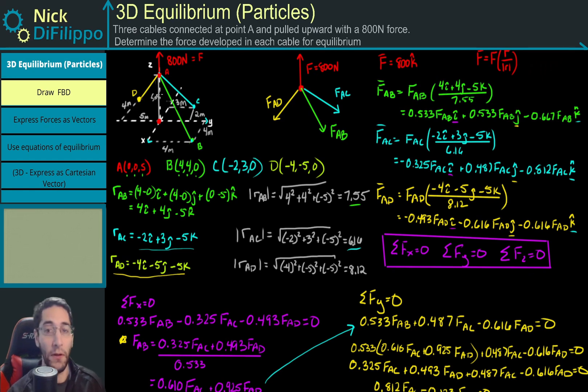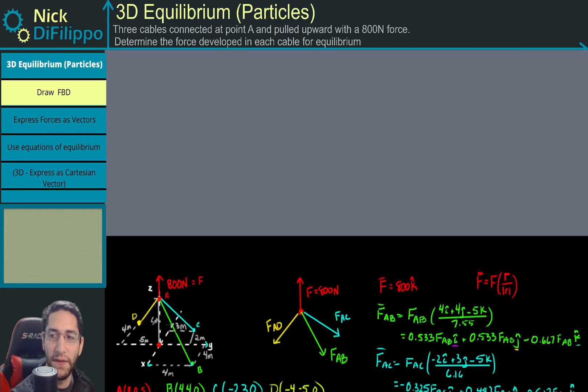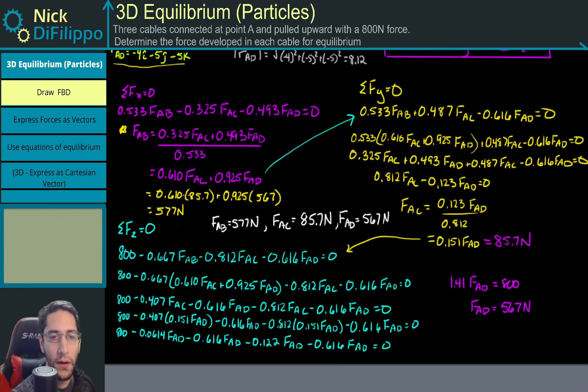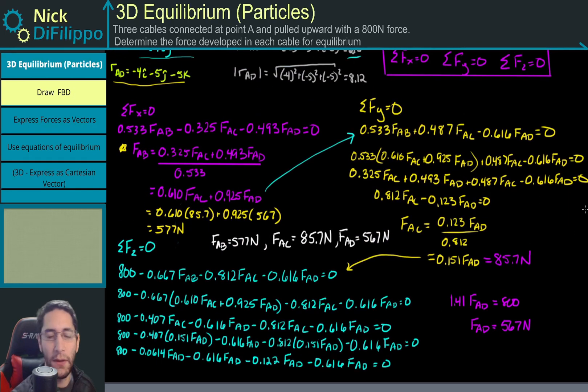This problem took a long time and there was a lot to it, but we had to be methodical. First we would find our free body diagram, then we would express our forces as Cartesian vectors, and this took a while because all of these tension forces were forces in 3D space. We needed to figure out their position vector. After we have all of our forces as Cartesian vectors, we could write our equations of equilibrium.